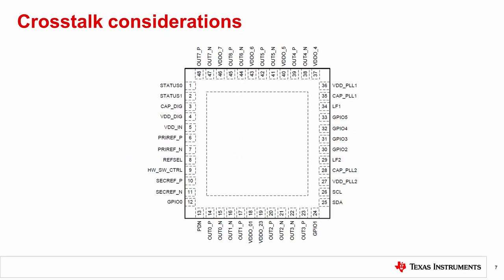This is a pinout of an example clocking device. There are 8 outputs distributed on two sides of the chip. Clock performance can be optimized by assigning the output frequencies to the correct channels, because mutual coupling across channels can cause crosstalk spurs. By planning output distribution differently, these spurs may be mitigated.